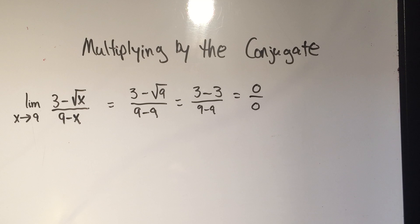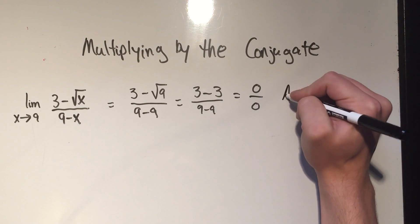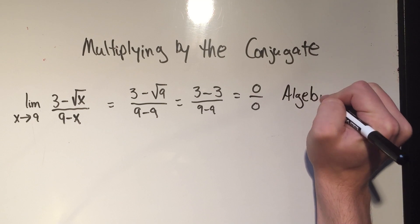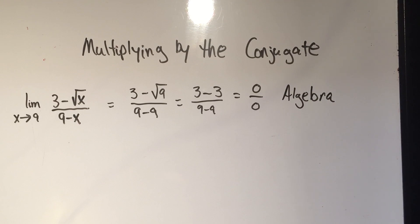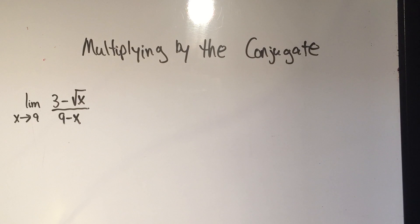Now 0 over 0 is what we call indeterminate. We don't know what it is. We cannot determine the value, and it's not good enough to leave your answer like that. So we need to do algebra. Whenever you get 0 over 0, we have to do algebra, and in this case that algebra technique is multiplying by the conjugate.